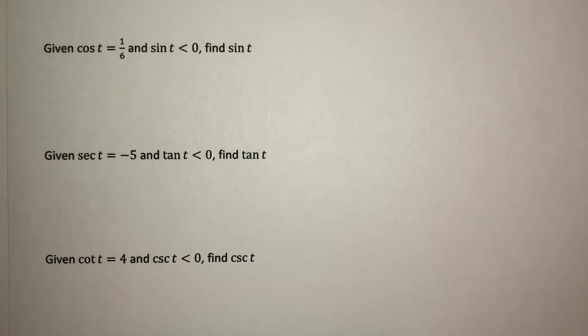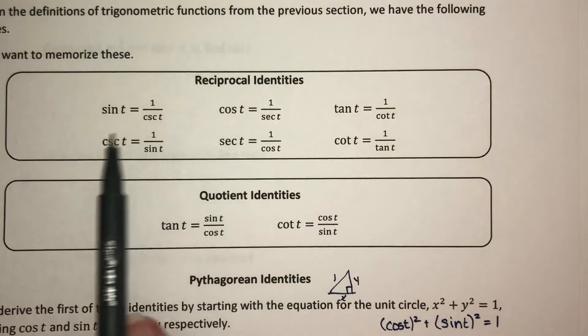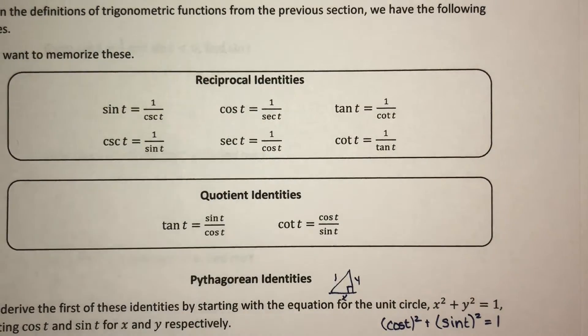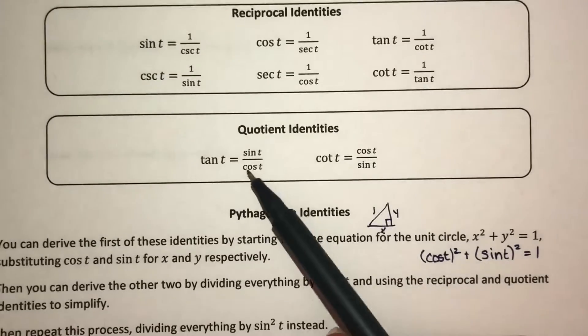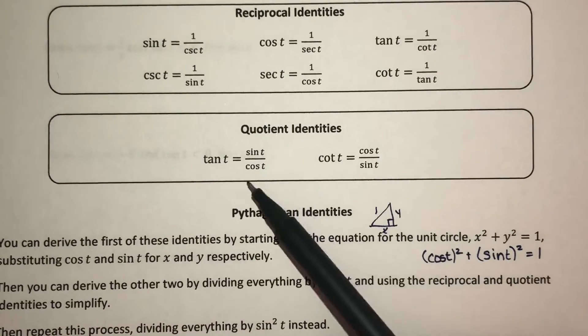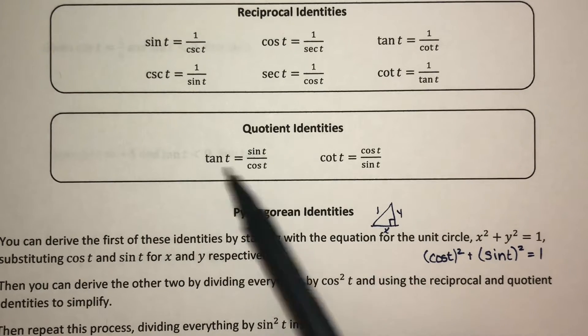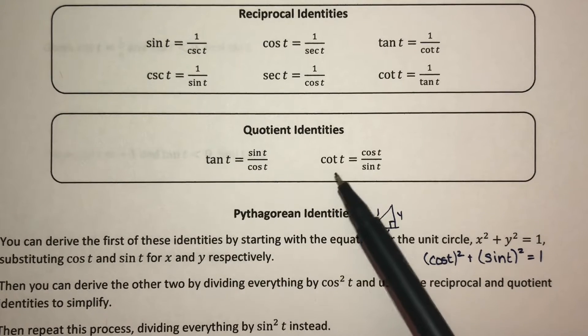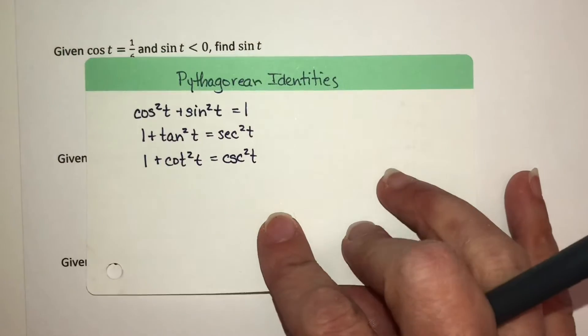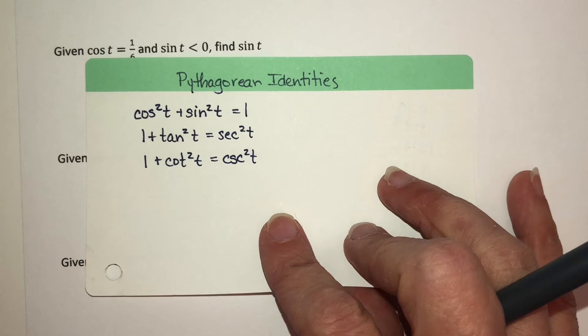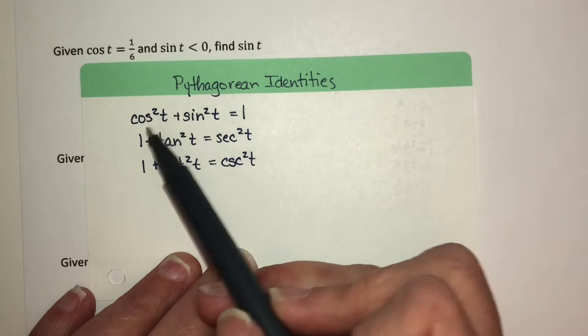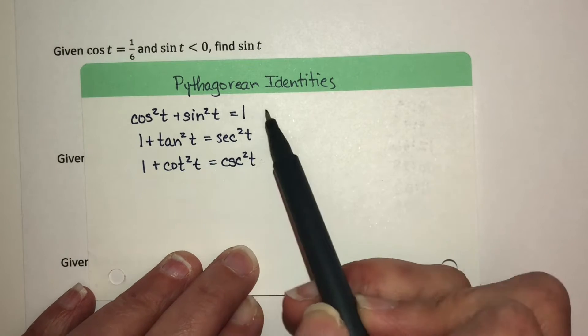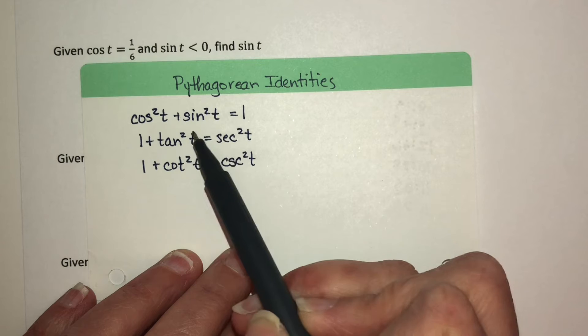Looking at the identities, there's no reciprocal function that correlates sine and cosine directly, so that's not useful. We also have sine and cosine together in a ratio identity, but without knowing a tangent or cotangent value we can't solve for sine that way. What we need specifically are the Pythagorean identities — one has cosine squared, sine squared, and 1, which we can solve for sine.